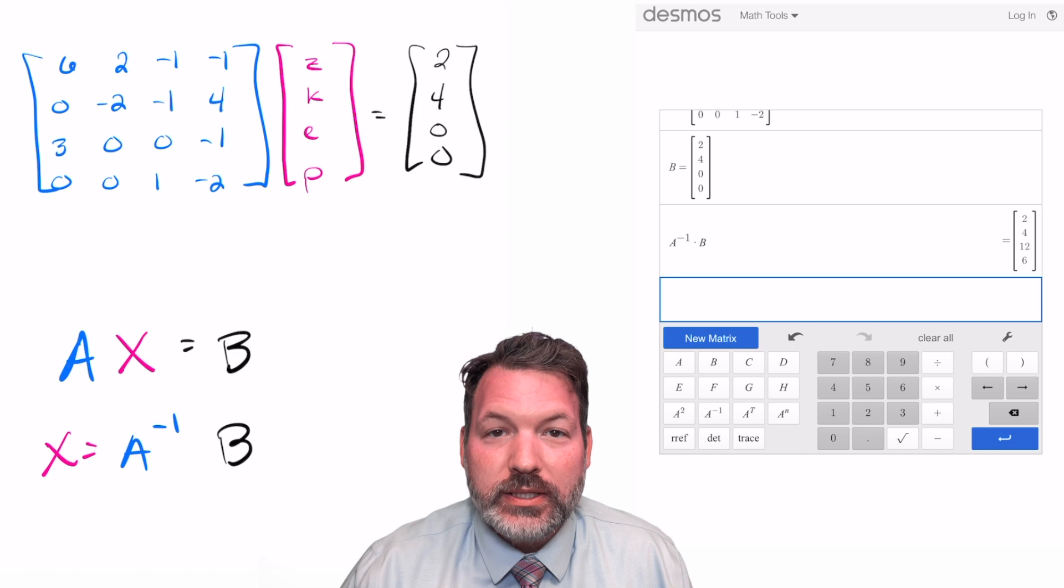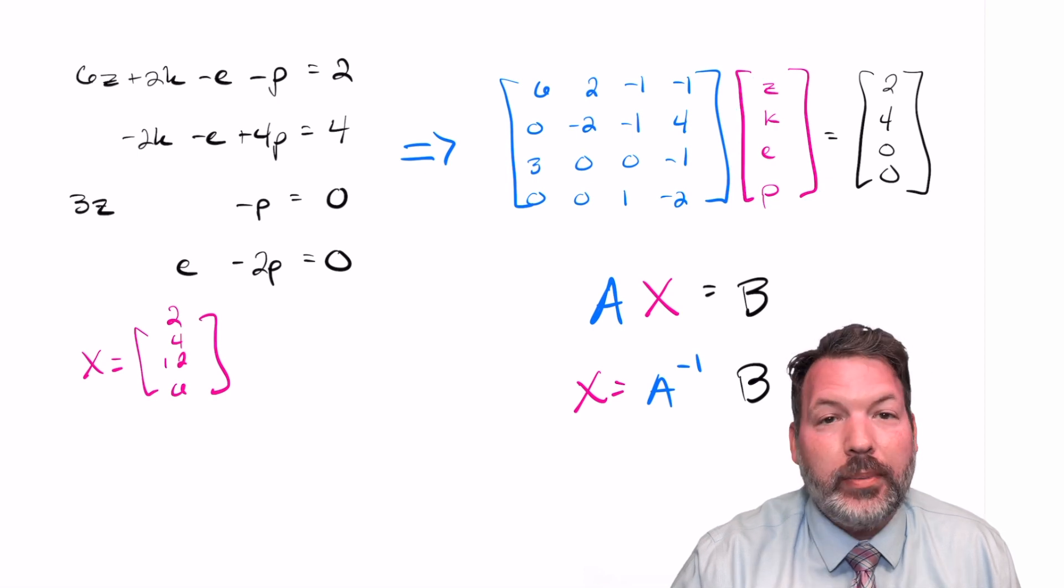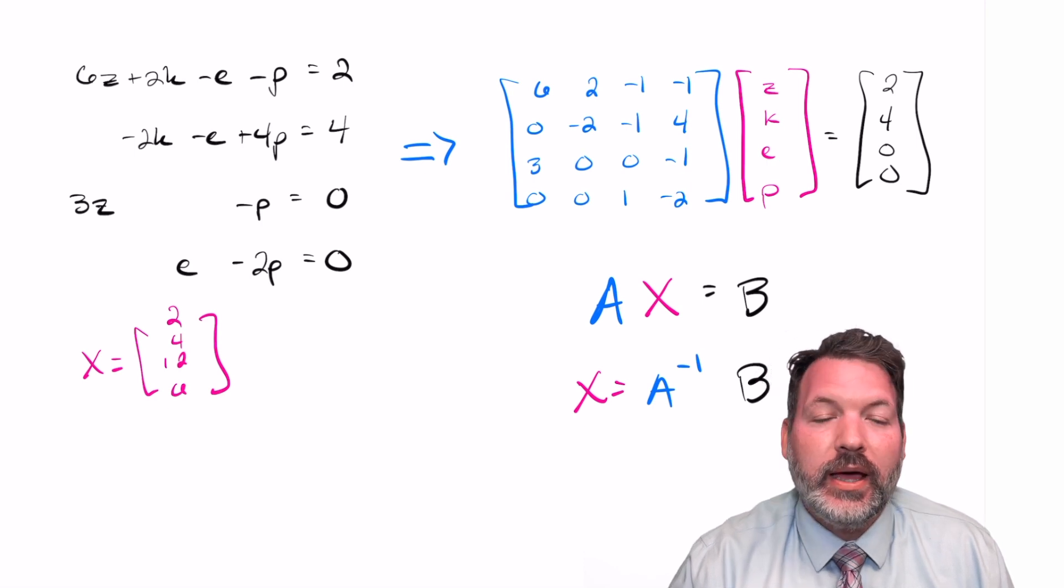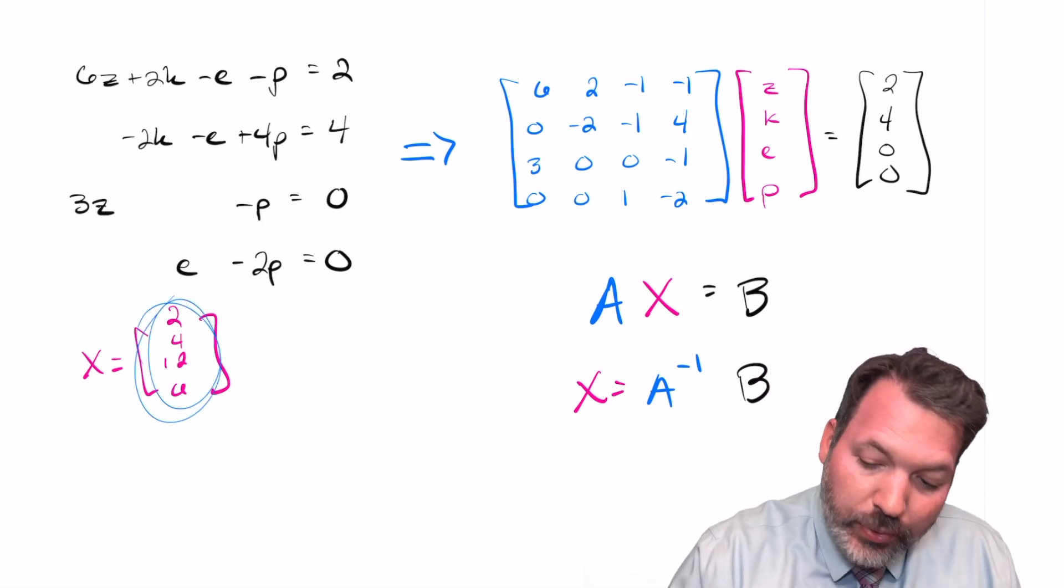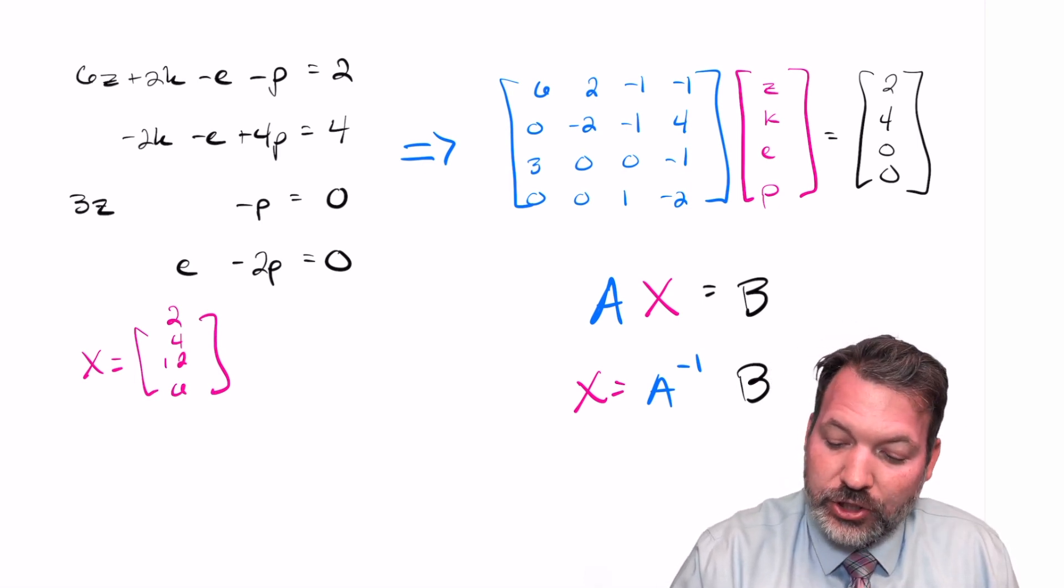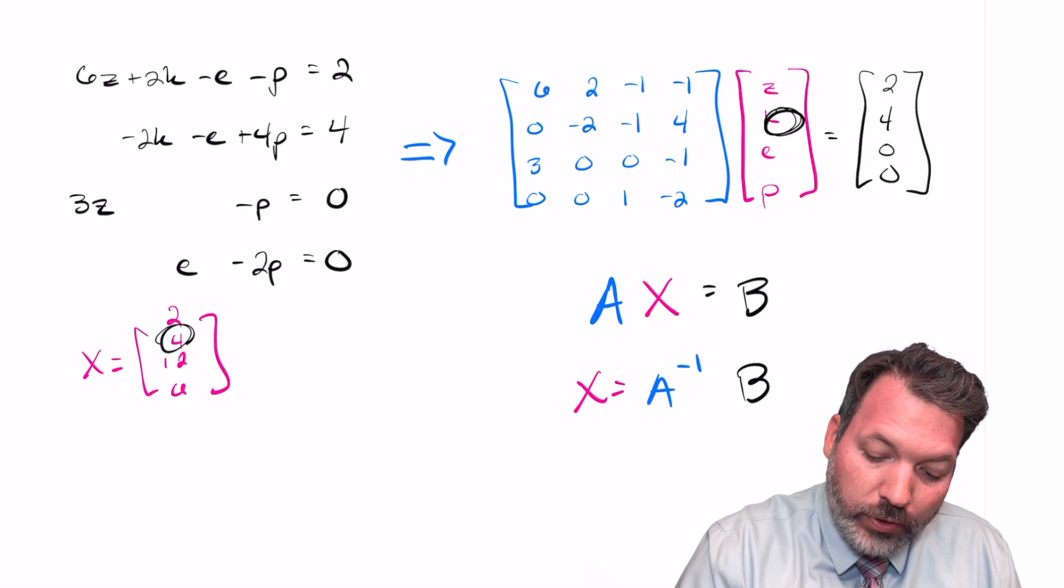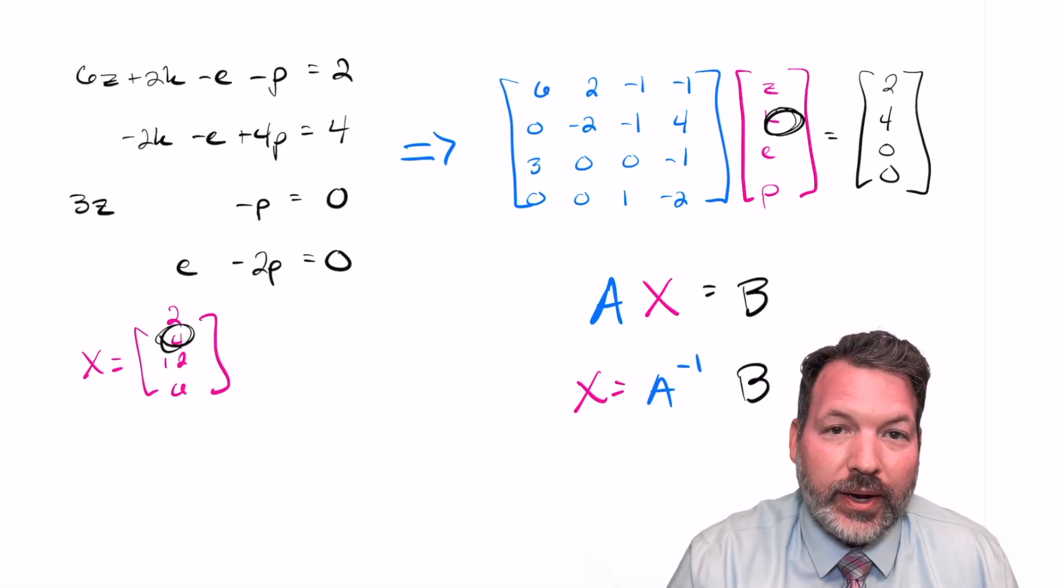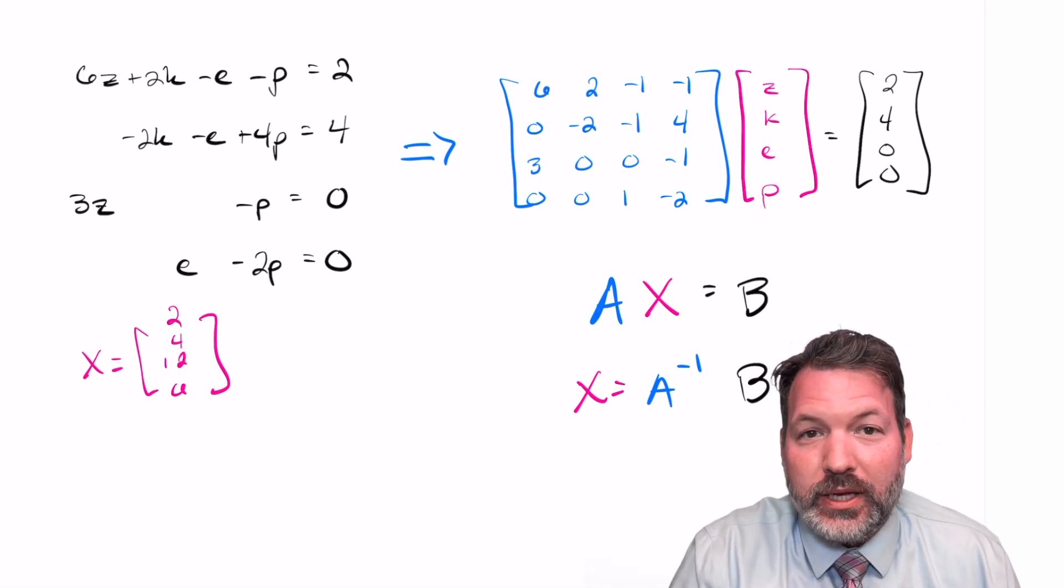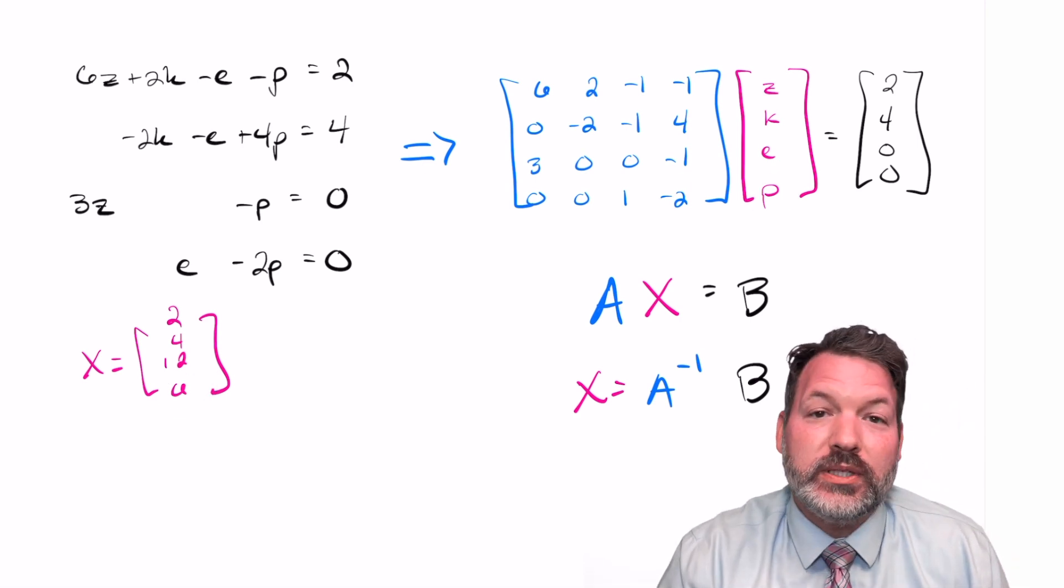Now, remember, that variable matrix was in the order Z, K, E, P. In other words, how many seals do the zebras represent? How many seals do the kangaroos represent? How many seals do the elephants represent? And how many seals do the polar bears represent? These numbers here are those equivalents. And you can see a lot of the stuff that we already figured out at our other levels of abstraction. A single zebra is the equivalent of two seals. A kangaroo is equivalent to four seals. That's actually something that we could have solved for directly before, but we didn't. An elephant is equivalent to 12 seals. Again, that's something we could have figured out easily before, but we just didn't happen to. And a single polar bear is equivalent to six seals, which we definitely did figure out.